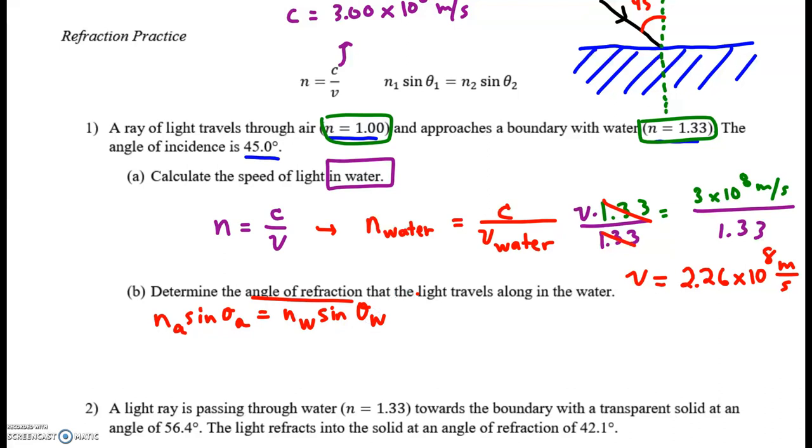So now I plug in. The refractive index of air is 1. The angle in air is 45. The refractive index of water, we know, that's 1.33. Times sine of the angle in water.